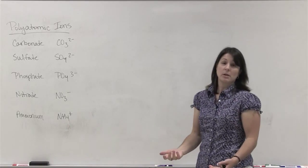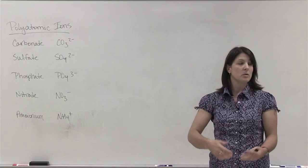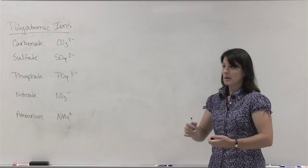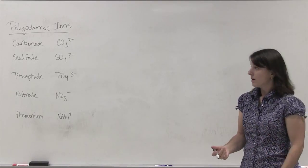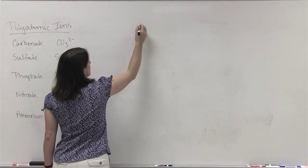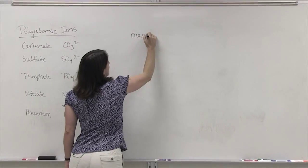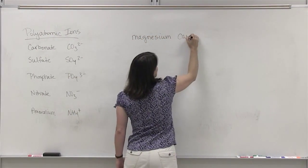These ions can be incorporated into ionic compounds exactly the same way that we used metals and non-metals to make ionic compounds. The charges must balance each other so that you have a neutral compound. So if you were going to write the formula for magnesium carbonate.